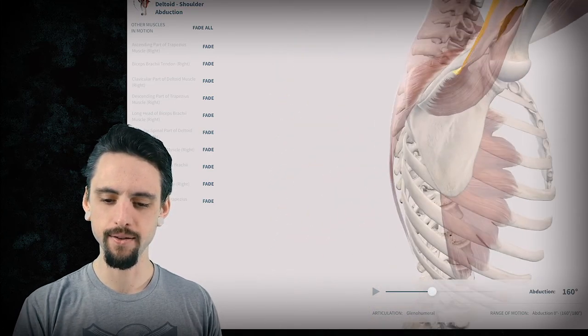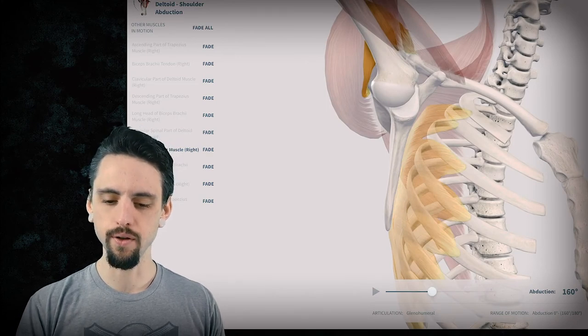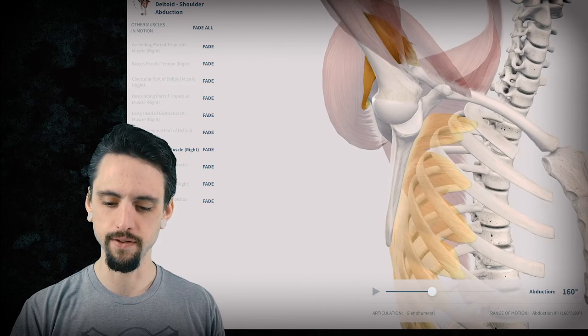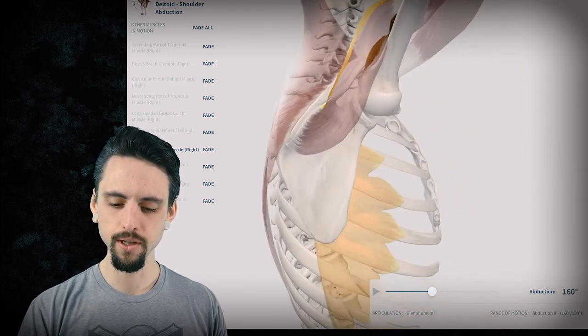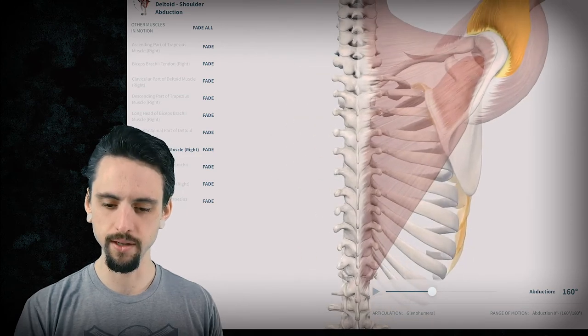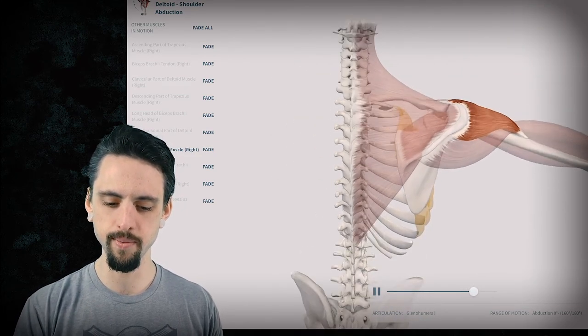And part of that is your serratus anterior muscle right here. So you notice the fibers are lifting up onto the first and second ribs there, so it's pulling your shoulder blade up there and forward. So just one more time here. Let's just look at the motion. I'm going to spin the model around as we look at it. So here's from the back.